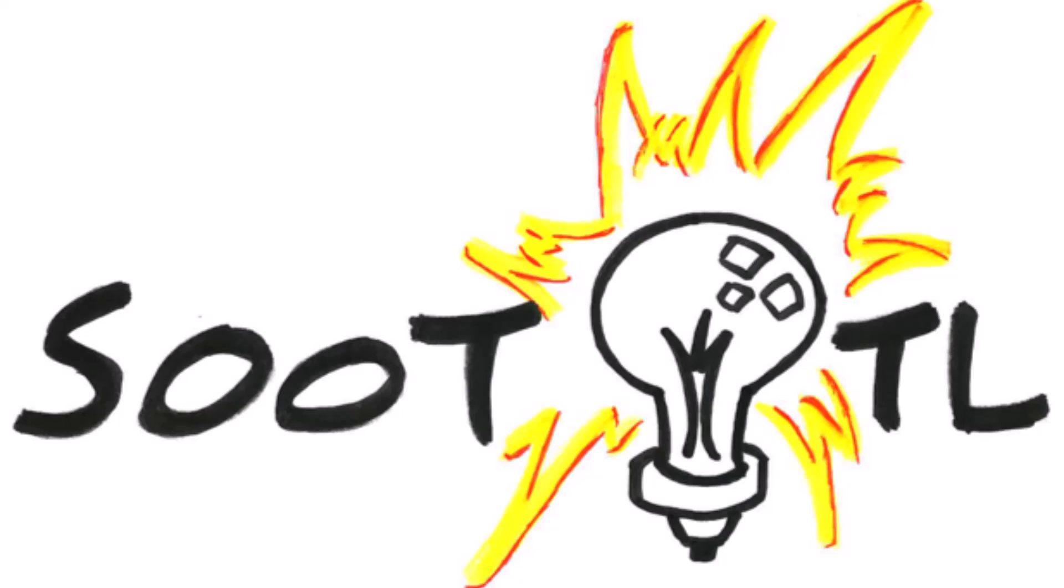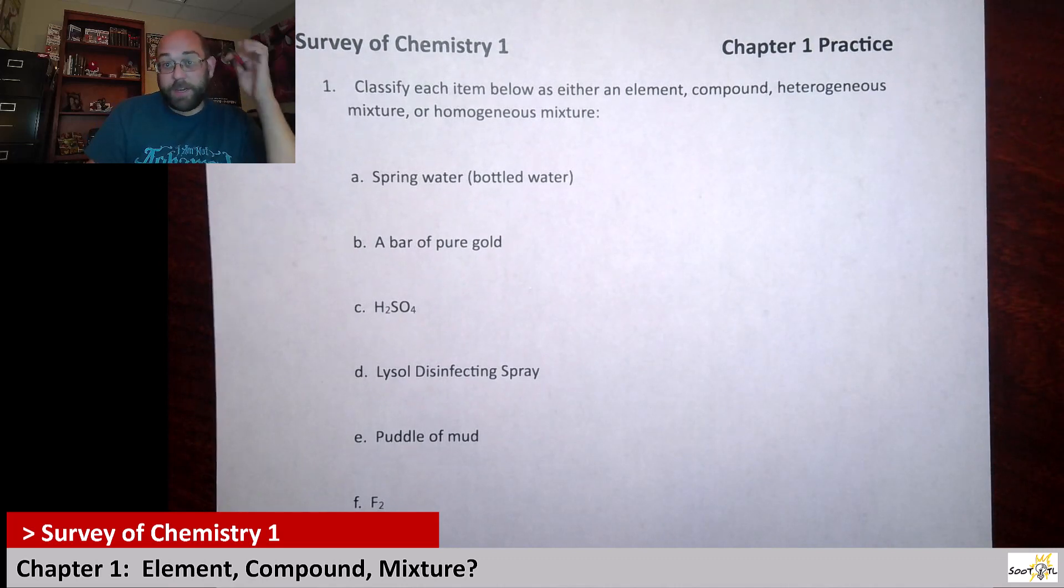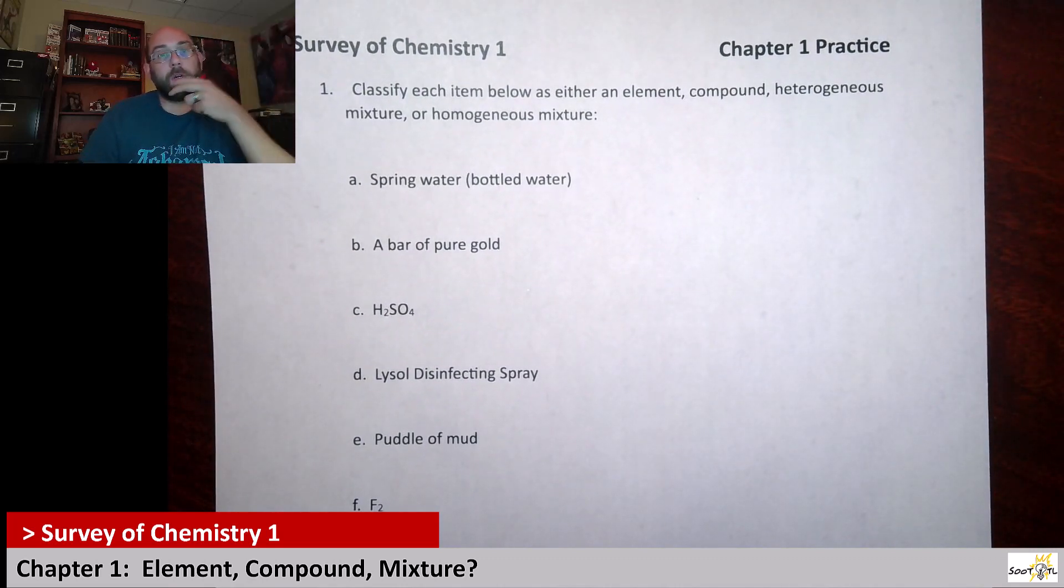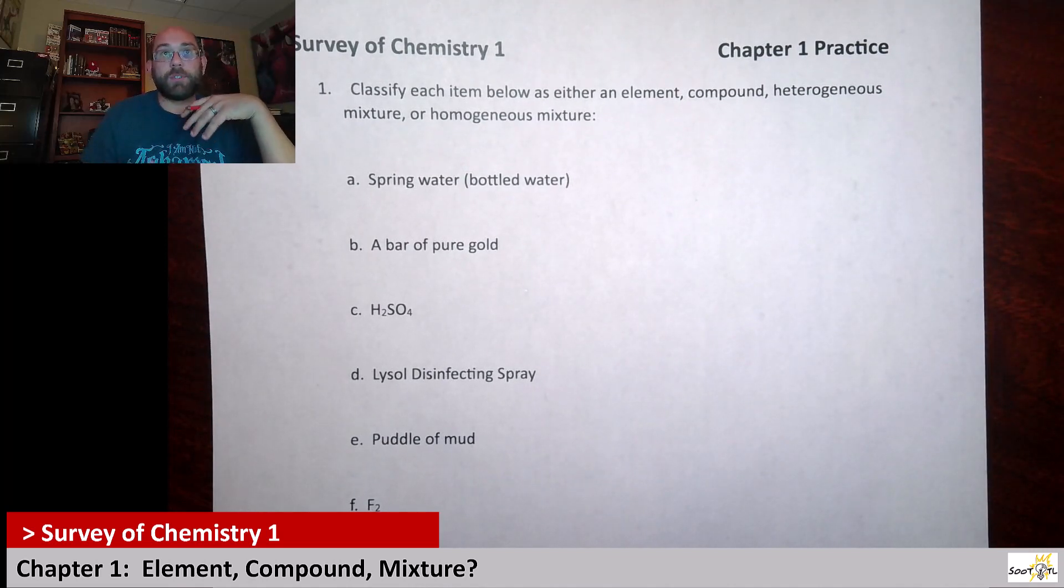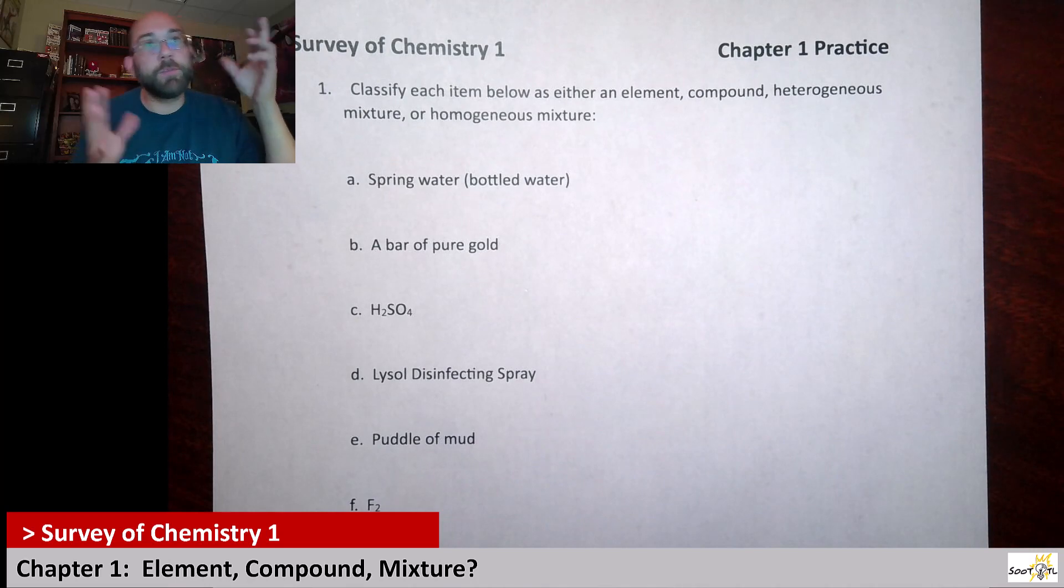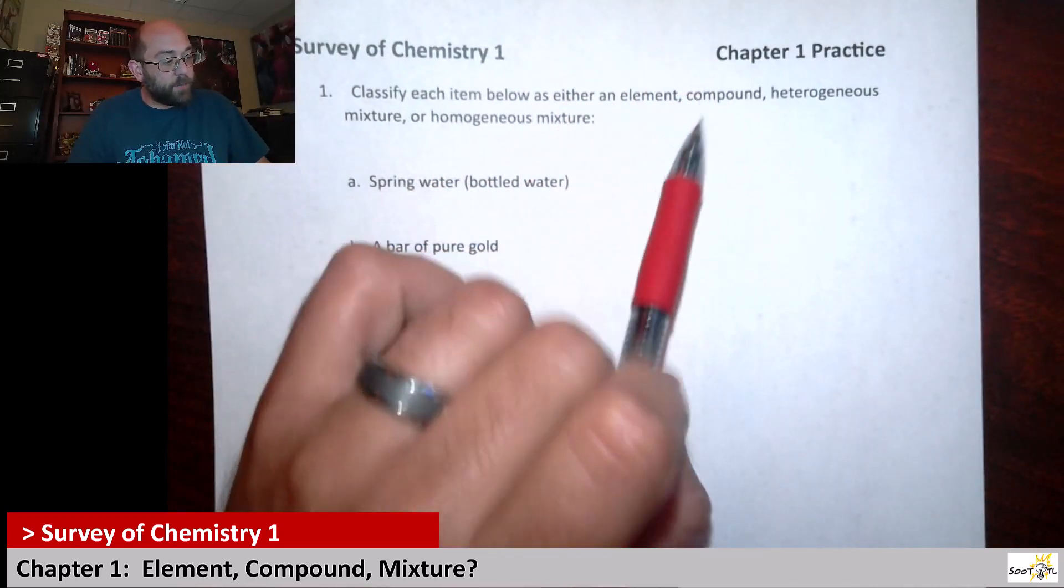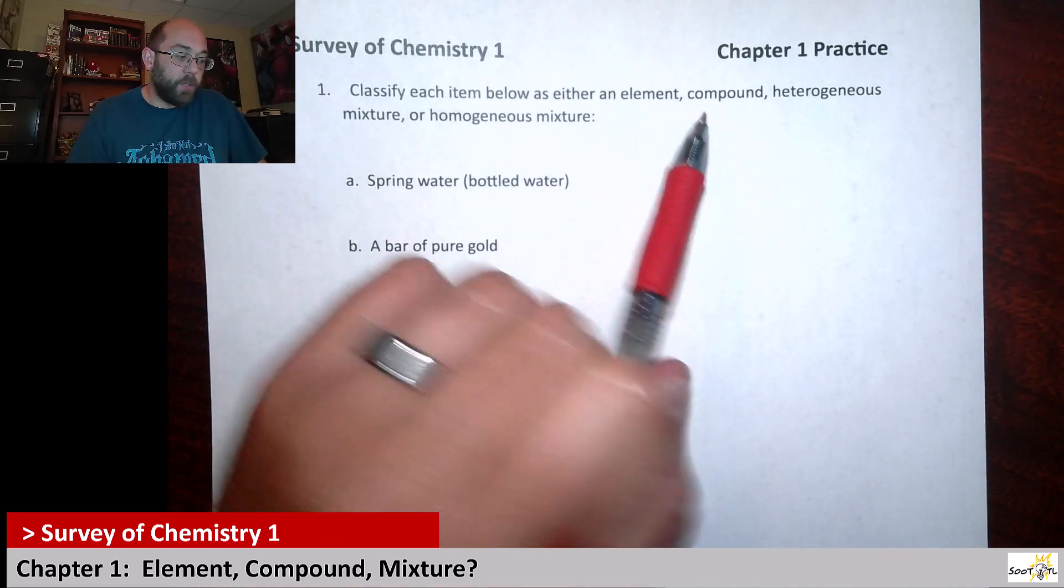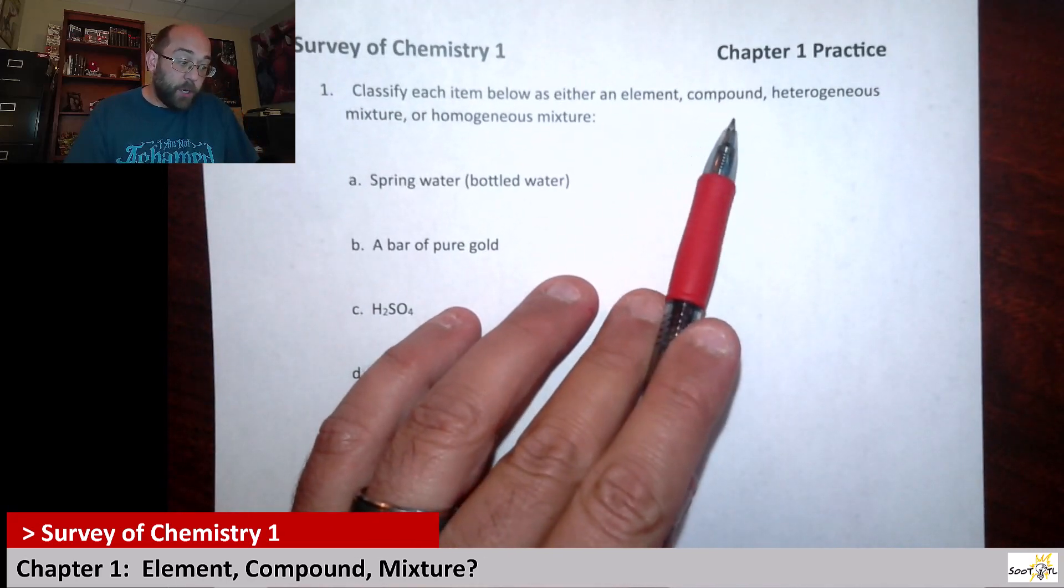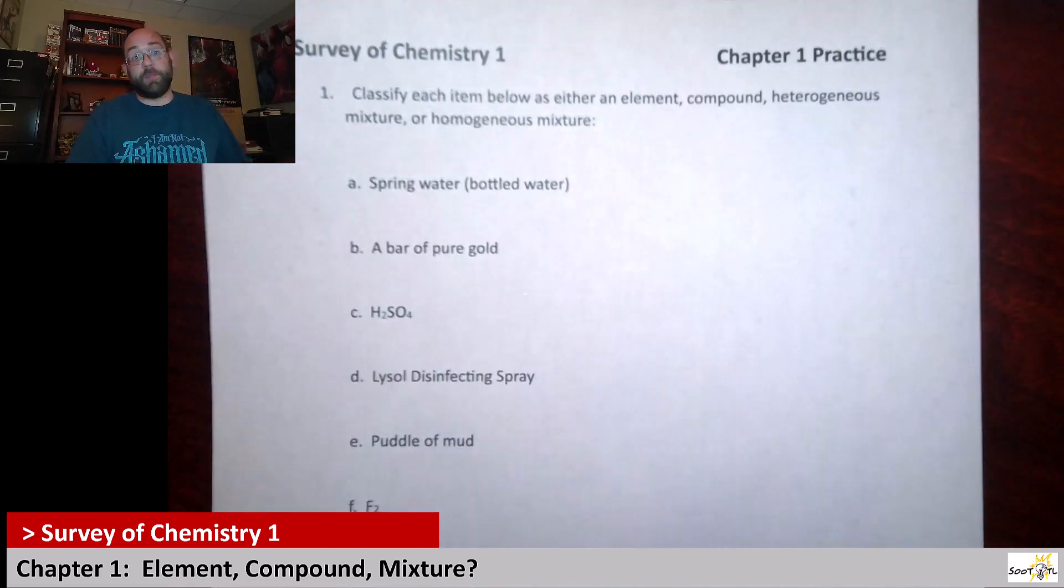This is a Sutotal production. Alright, hello surveyors. This is our third video for chapter one practice. This one's not going to be too long. Here we're looking at different ways we can classify things. What we're looking at is can you identify something as an element or a compound? And from there, can you differentiate whether they're a mixture, whether they're heterogeneous or homogeneous?